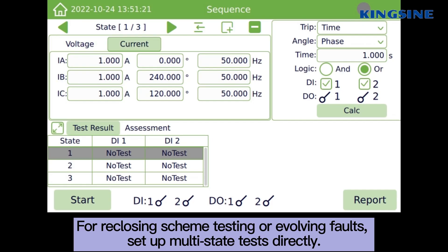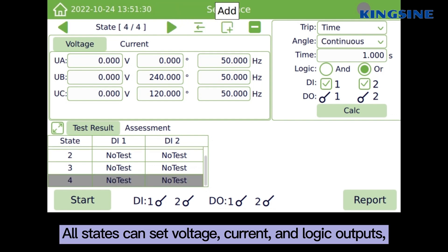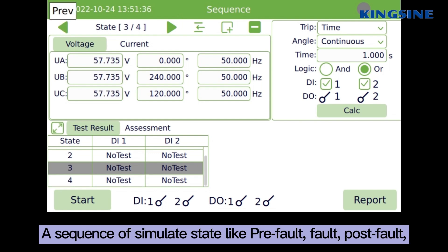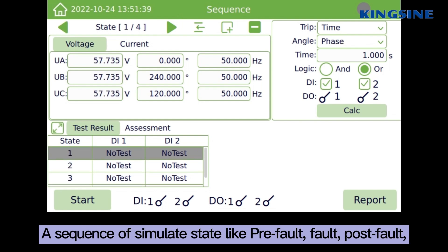For re-closing scheme testing or evolving faults, set up MOLIS data tests directly. All states can set voltage, current, and logic outputs. A sequence of simulated state like pre-fault, fault, post-fault.